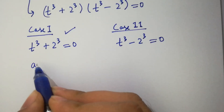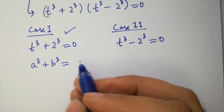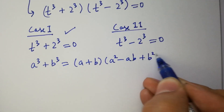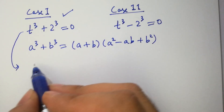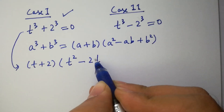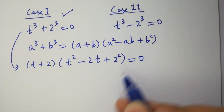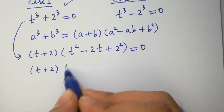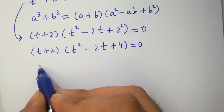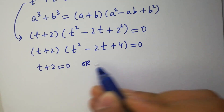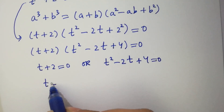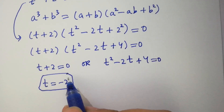Since a³ + b³ = (a + b)(a² − ab + b²), it will be (t + 2)(t² − 2t + 4) = 0. Either t + 2 = 0, giving t = −2, which is our first real solution.